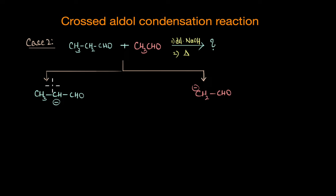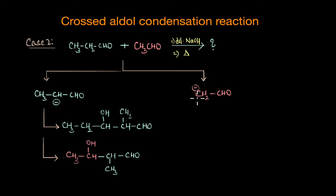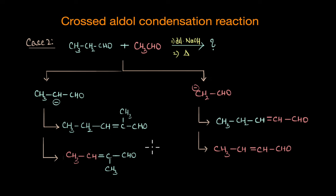These enolate ions can attack another molecule of the same aldehyde or a different aldehyde. When this enolate ion attacks the same aldehyde we get this particular beta-hydroxy aldehyde. Similarly, the CH2-CHO enolate ion can attack propanal as well as acetaldehyde, giving us two different beta-hydroxy aldehydes. These are the various aldol products formed, and in the second step, on heating, these aldols undergo dehydration to give the corresponding alpha-beta unsaturated compounds. In essence we get four different products.